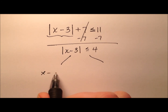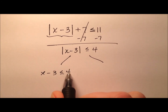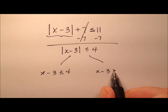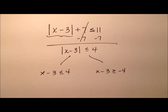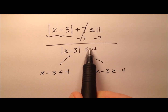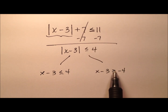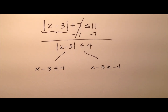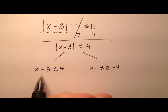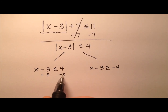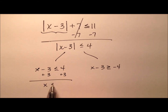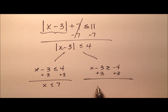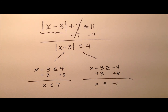So I have x minus 3 is less than or equal to 4. And then when I do the negative side, I'll have x minus 3 is greater than or equal to negative 4. When I do the negative side, I have to switch the sign of the inequality — so instead of less than or equal to, it'll be greater than or equal to. Now let's go ahead and solve both of these simple inequalities: x is less than or equal to 7, and x is greater than or equal to negative 1.